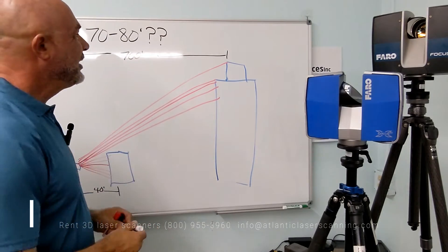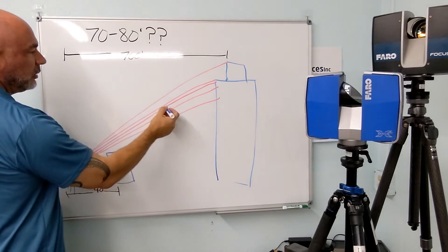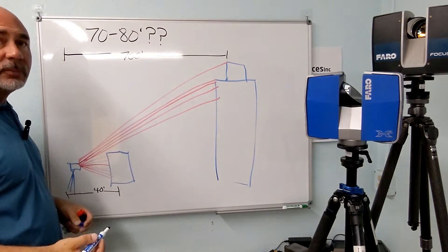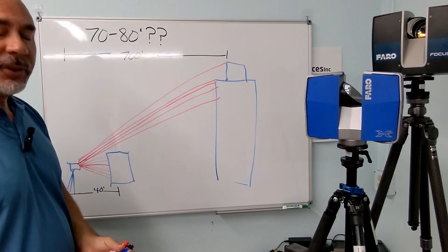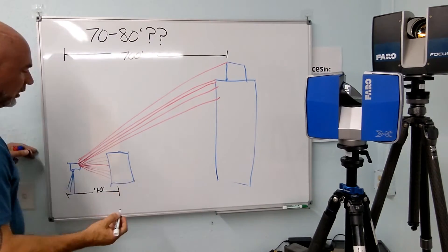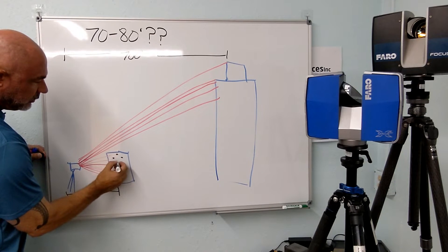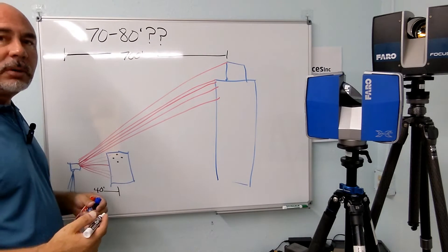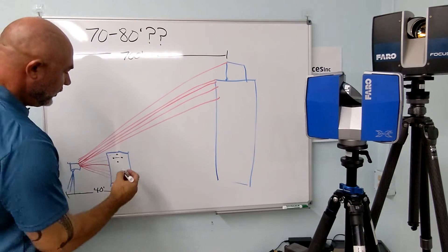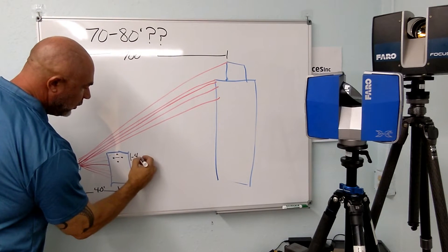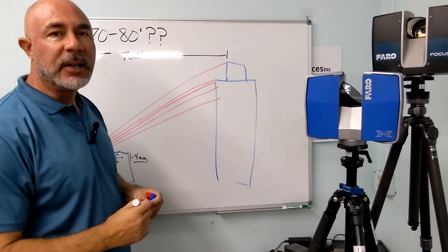Is Faro telling us that our accuracy in this range is from this point to the scanner, or is it our left to right where the points have made contact with the building? This is what you need to remember. When we're looking at the points that are making contact with our object that we're trying to capture, this distance between the points that have made contact, this is where our one to four millimeter accuracy for say our S150 scanner comes into play.